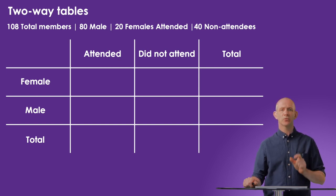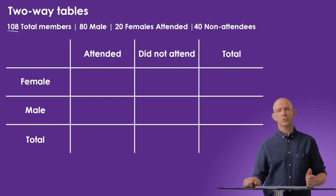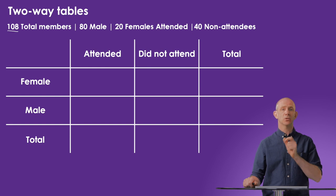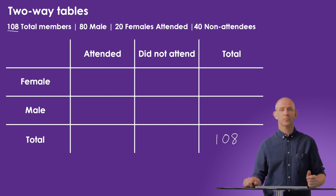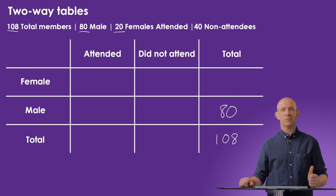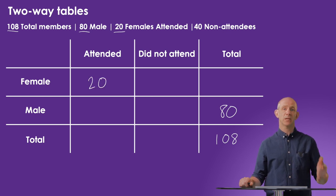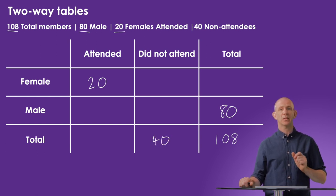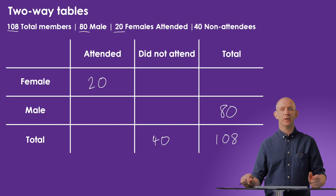This will give us an overall total amount. When dealing with two-way tables, the first thing to add is the total piece of data — in this case the total amount of supporters, which is 108, placed in the total-total cell. We can then work through the given information: 80 male supporters go in the male total, 20 female supporters attended goes in the female-attended box, and 40 supporters did not attend goes in the total for the did-not-attend column.